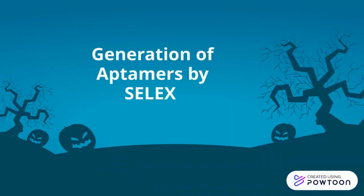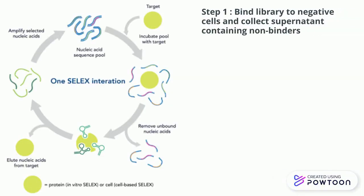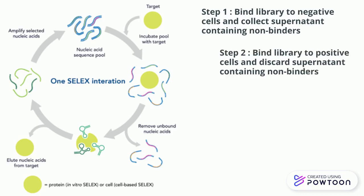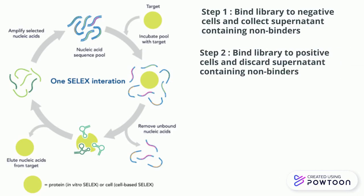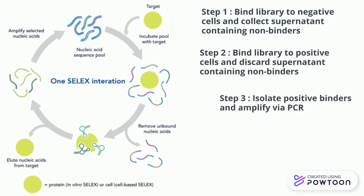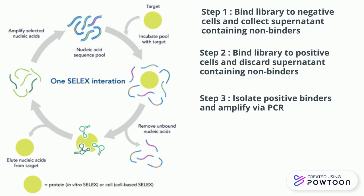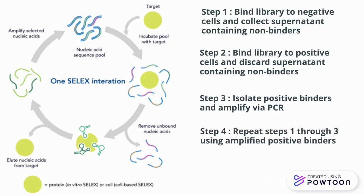Next is the generation of aptamers by SELEX. The first step is to bind the library to negative cells and collect supernatants containing non-binders. The second step is to bind the library to positive cells and discard supernatants containing non-binders. The third step is to isolate positive binders and amplify via PCR. The fourth step is to repeat steps 1 to 3.